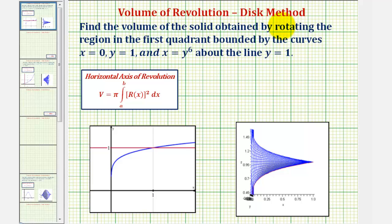We want to use the disk method to find the volume of the solid obtained by rotating the region in the first quadrant bounded by the curves x equals zero, y equals one, and x equals y to the sixth about the line y equals one.